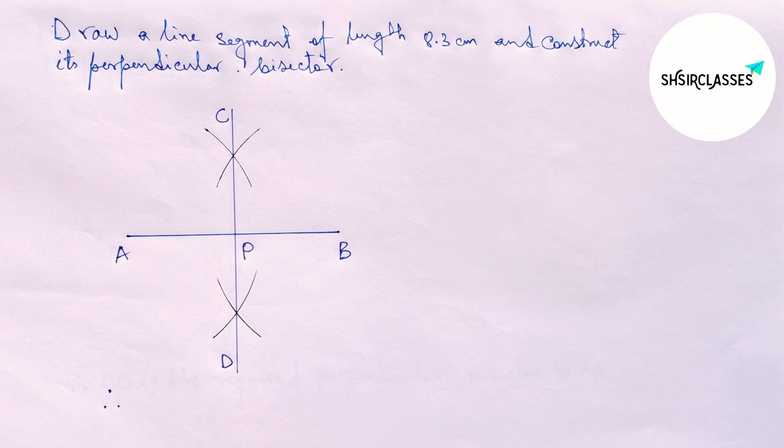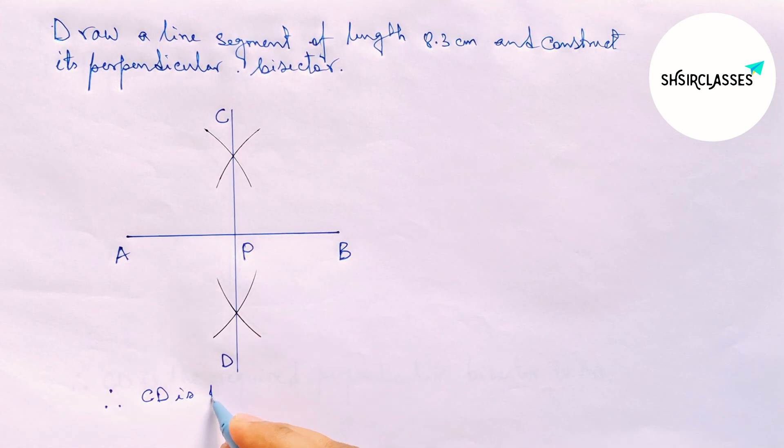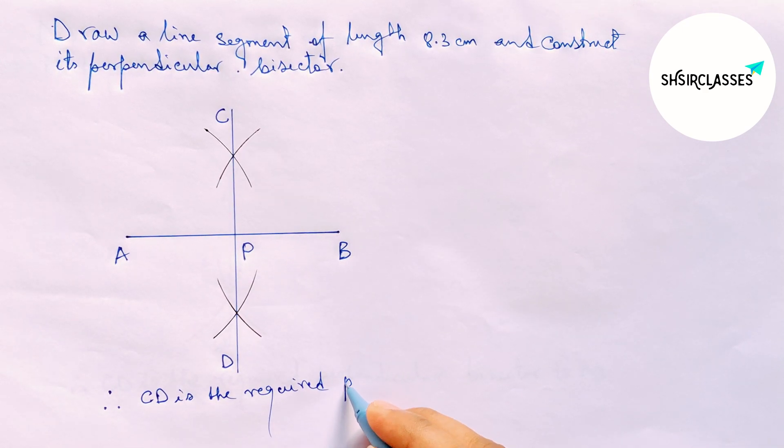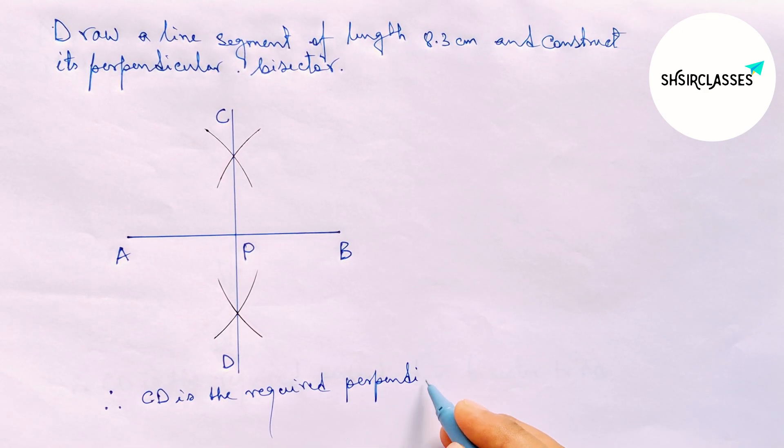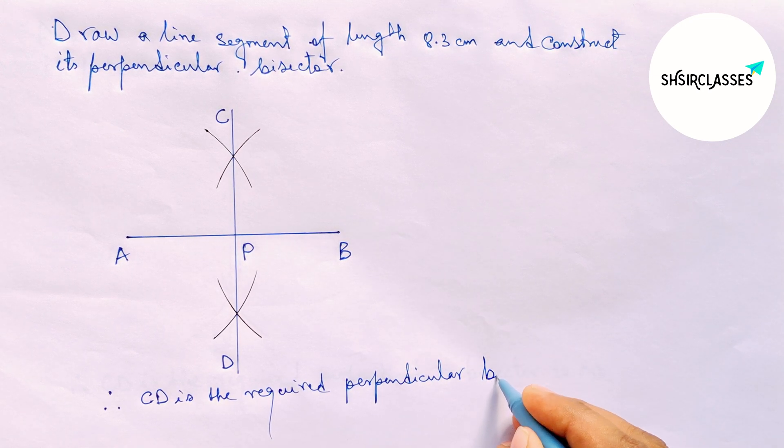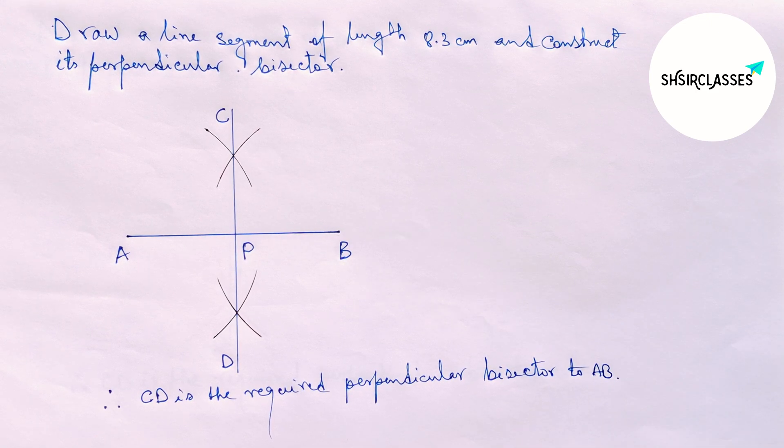Therefore CD is the required perpendicular bisector to the line AB equal 8.3 centimeter. And by this way you can construct a perpendicular bisector to a given line in easy way.